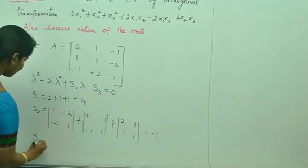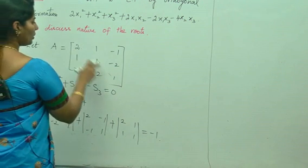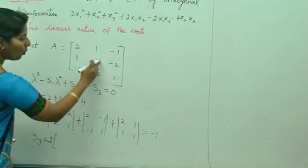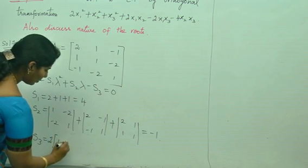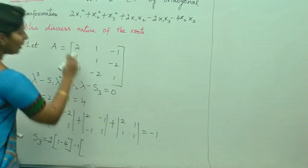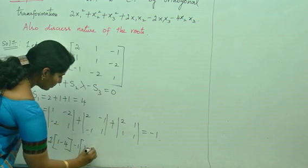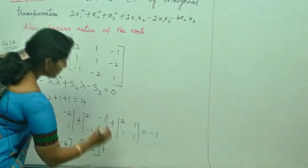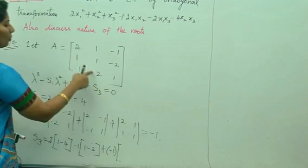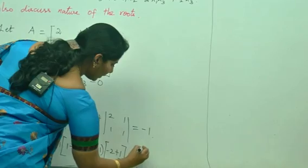s3 is the determinant of A. Expanding: 2 times (1 minus 4) minus 1 times (1 minus (minus 1)(minus 1)) plus (minus 1) times (minus 2 plus 1), the final answer for s3 is 4.